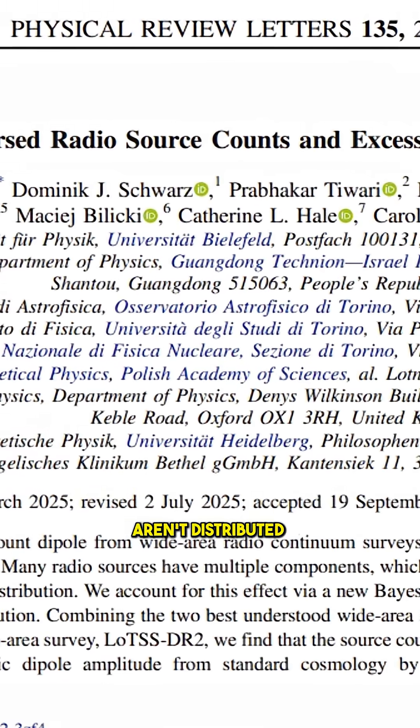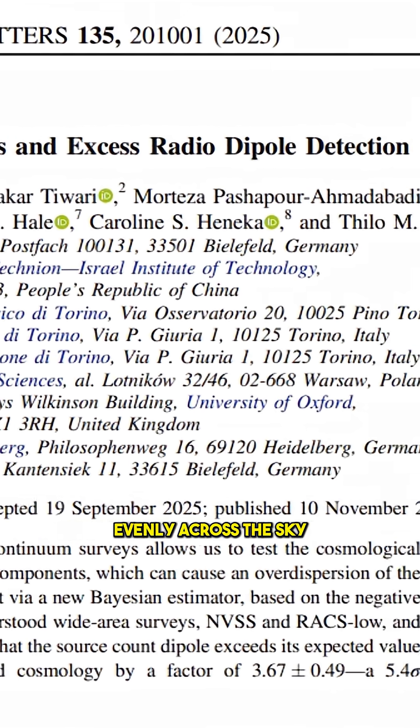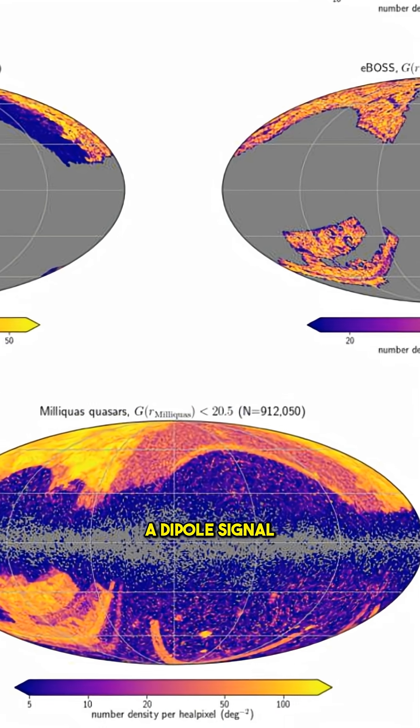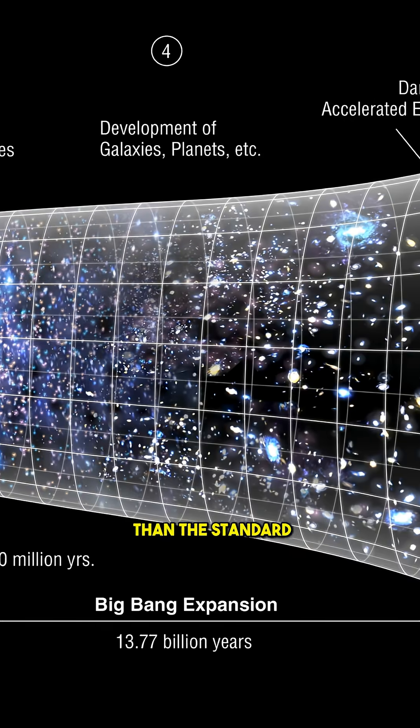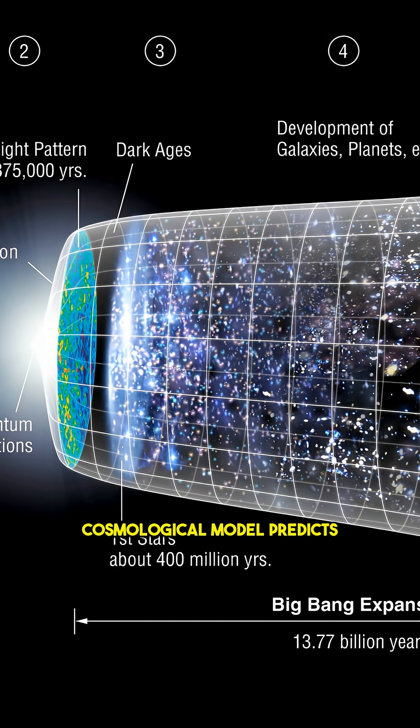Distant galaxies aren't distributed evenly across the sky. There's a strong directional imbalance, a dipole signal, and it's much stronger than the standard cosmological model predicts.